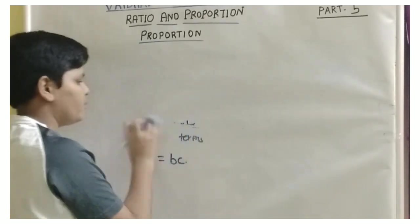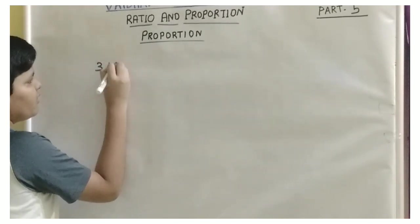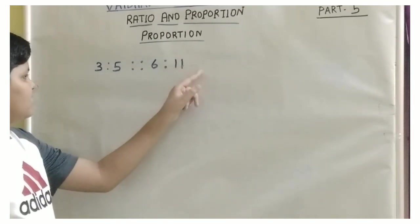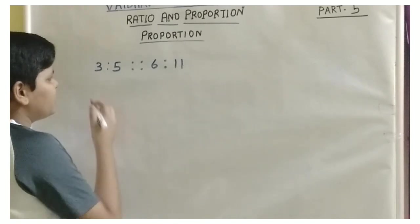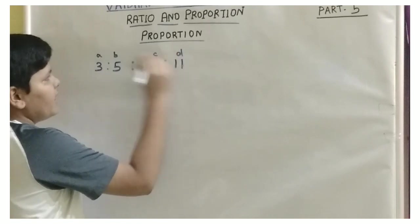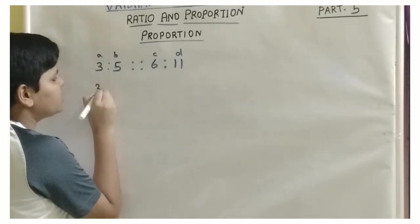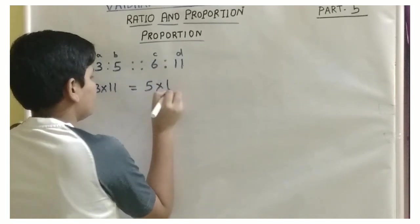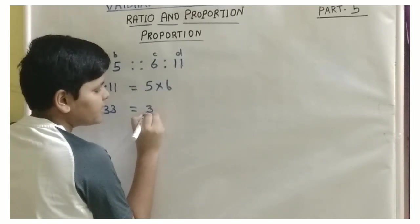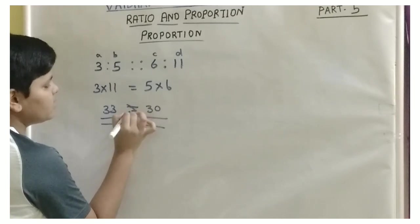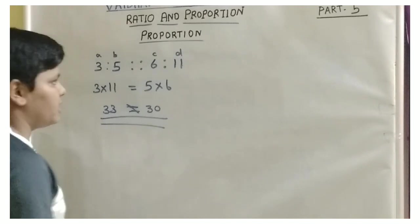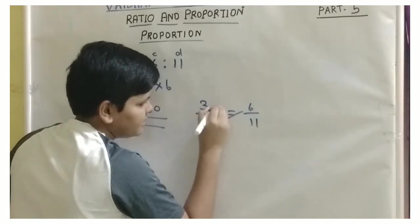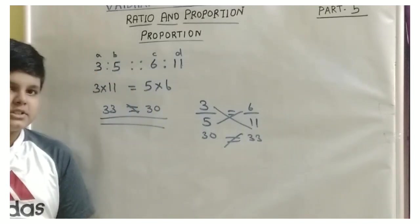We are taking the example: 3 is to 5 is proportional to 6 is to 11. Can we say that these two are proportional? Using our formula, a into d equals b into c: 3 into 11 should equal 5 into 6. But 3 into 11 is 33 and 5 into 6 is 30. Since 33 is not equal to 30, we can say that these two ratios are not proportional to each other.